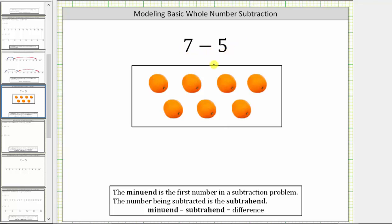Whenever we have a subtraction problem, the first number is called the minuend. The number we are subtracting is called the subtrahend. The result of the subtraction is called the difference.